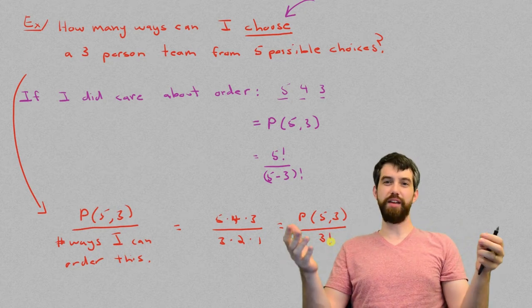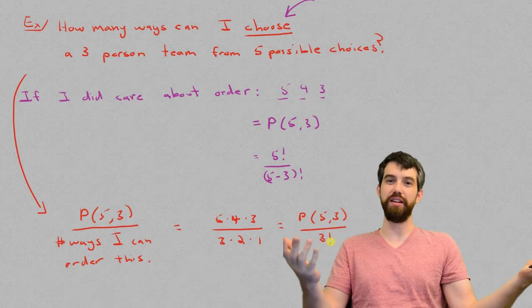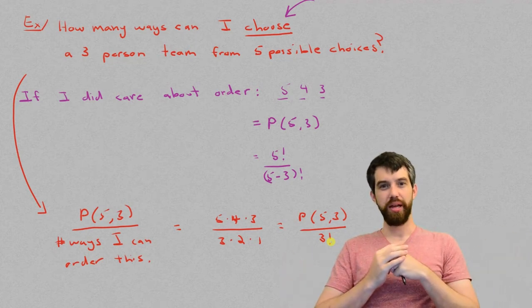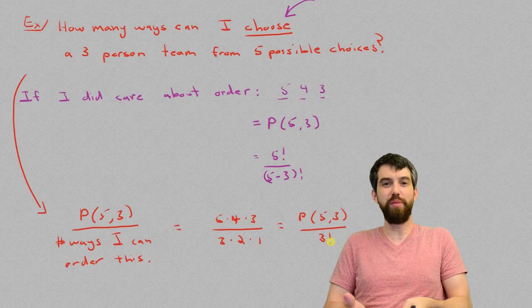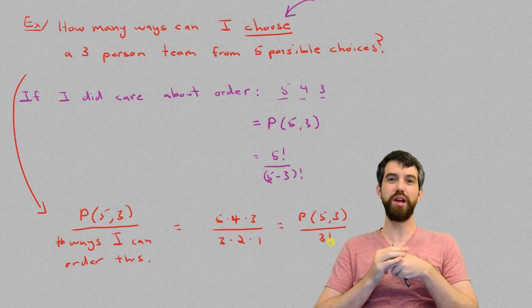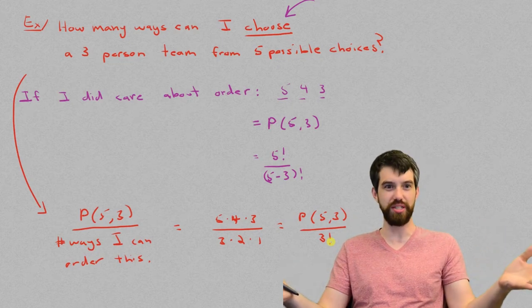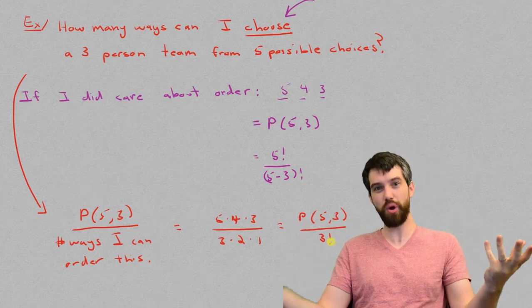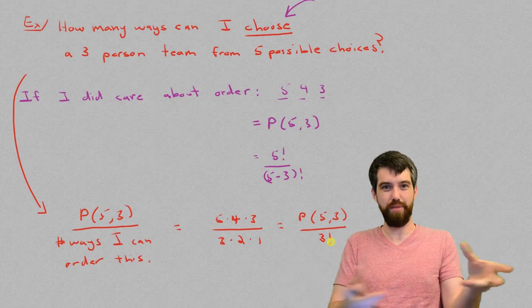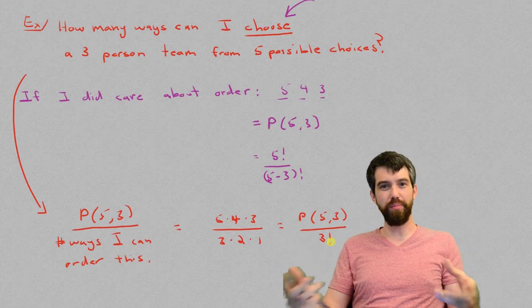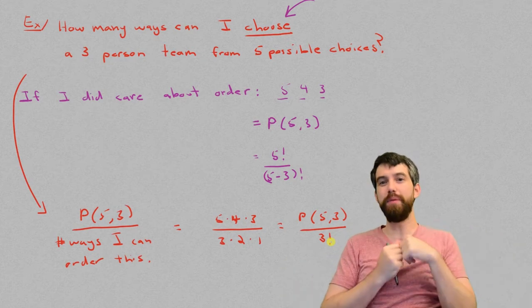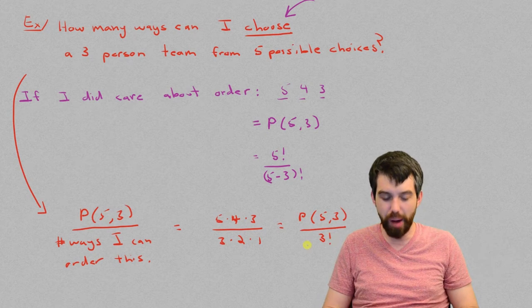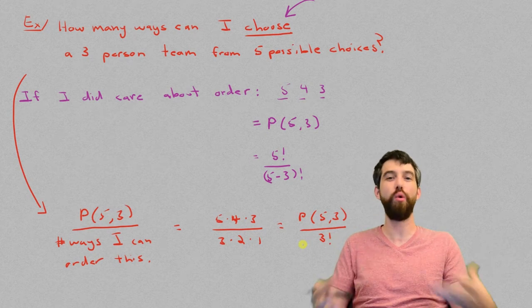So for example, if I had chosen Chris, Christine, and Cory, then those are going to be the three people on my team. Then what I'm doing when I divide it out by the three factorial is saying the choice where I go Chris, Christine, Cory, and the choice where I go Chris, Cory, Christine, and where I go Christine, Chris, Cory, and all the different ways that I can add those up and permute that order, that all of those are the same. It's the same three people on my team eventually. And so I'm just dividing out by the different number of ways that I could reorder them.